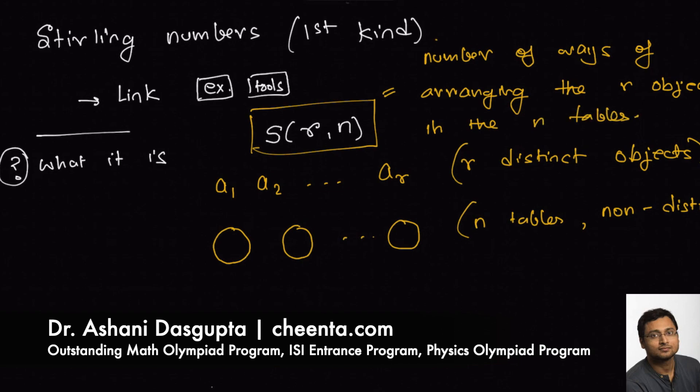That's the meaning of S(r,n), which is the Stirling number of the first kind. Remember, you are not only distributing the objects in the n tables, after distributing them you are also arranging them. So there are two steps: distribution and arrangement.